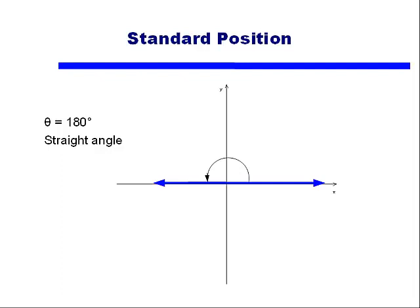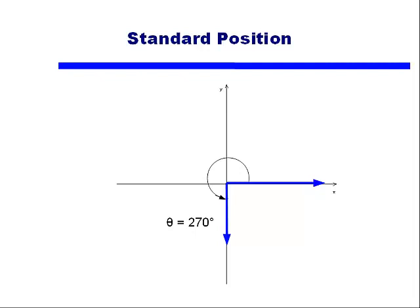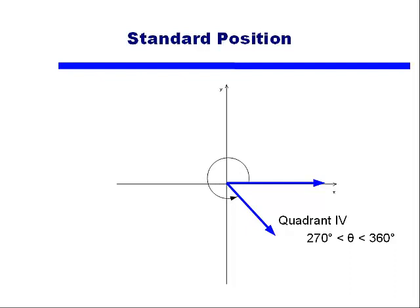We don't have to limit ourselves to acute or obtuse angles — we can continue this rotation. If you have an angle between 180 and 270 degrees, you'll be in quadrant III. The negative y-axis represents an angle of 270 degrees. And if we keep up our rotation into quadrant IV, those angles will be between 270 degrees and 360 degrees.